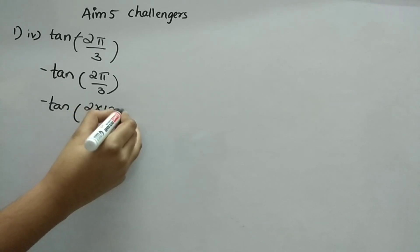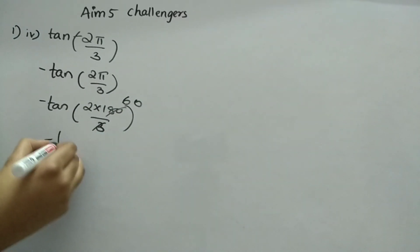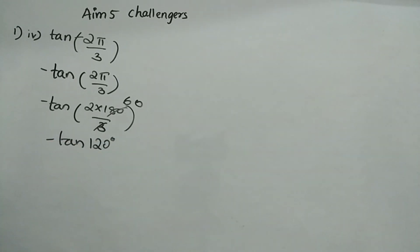360 as it is. And, minus tan 120. So, 120 value we don't know. We will take it as minus tan 180 minus 60.